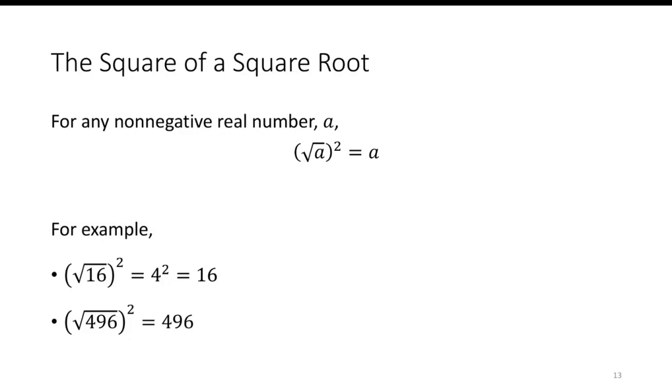For any non-negative real number A, the square of a square root of A is going to be A. For instance, the square root of 16 squared comes out to be, well, the square root of 16 is 4, and 4 squared is 16. So the square root of 16 squared is 16. Likewise, the square root of 496, that squared is 496.